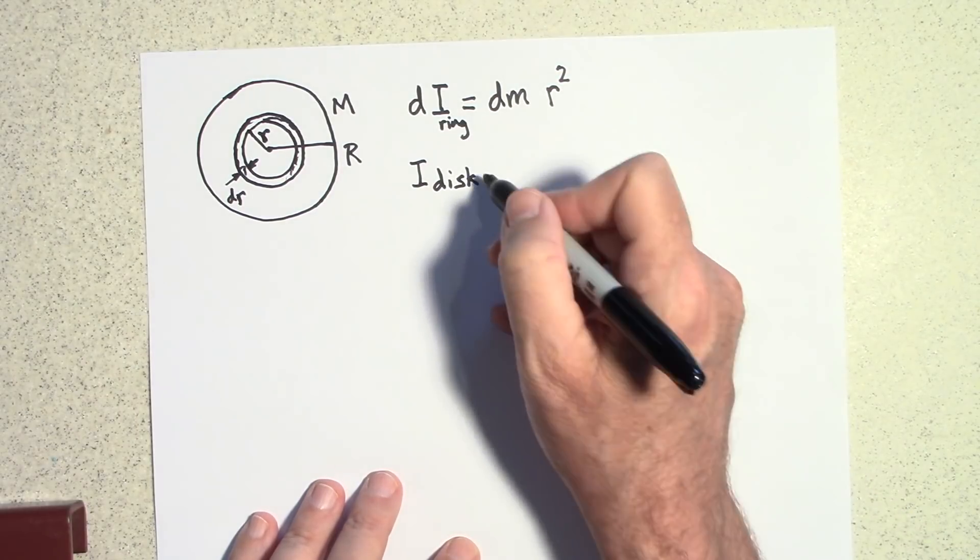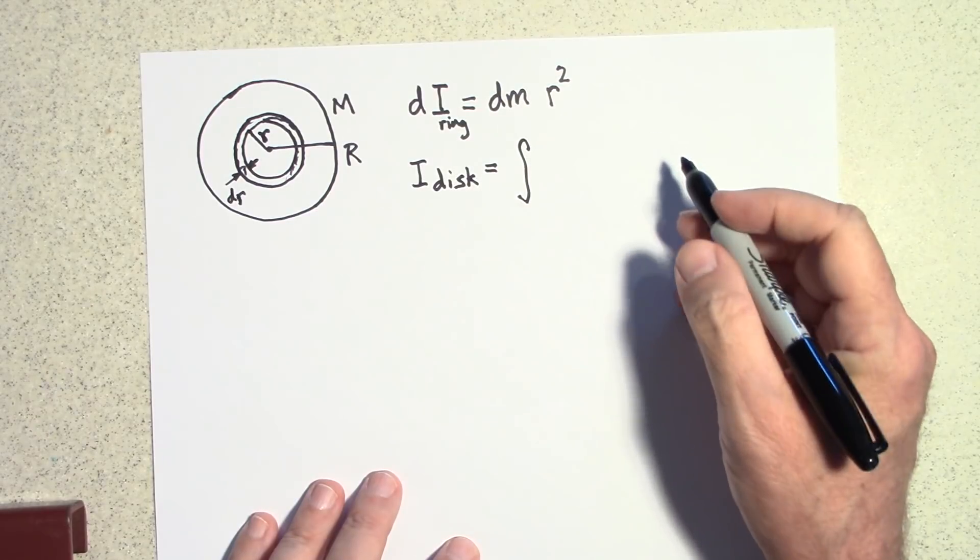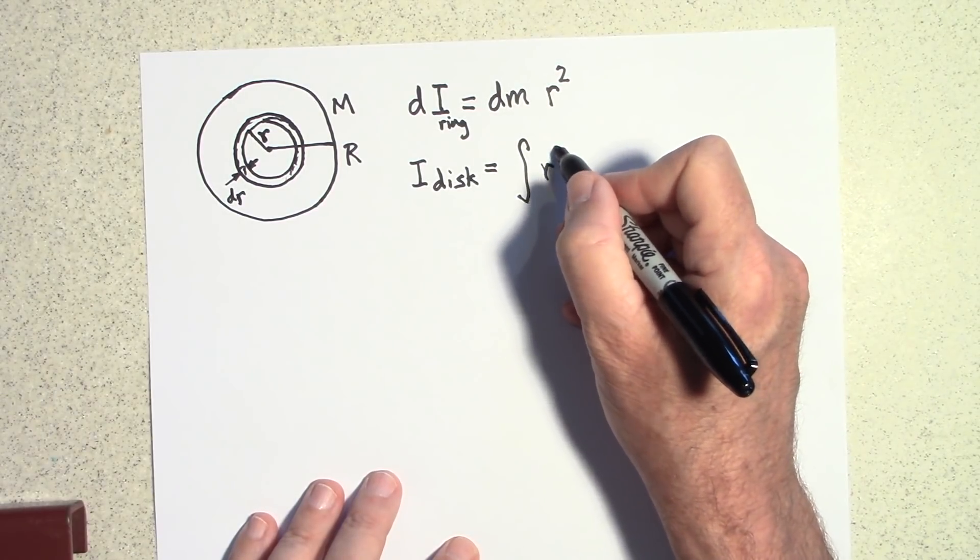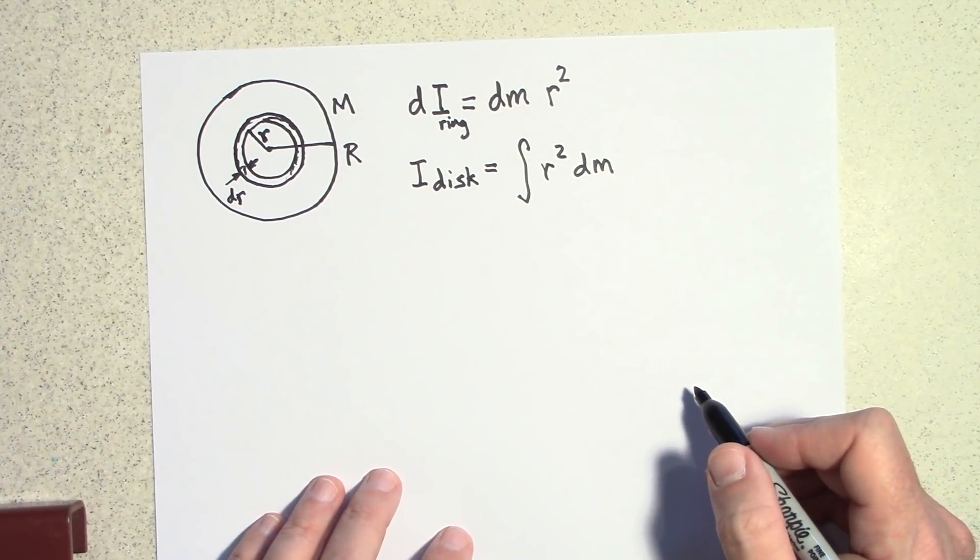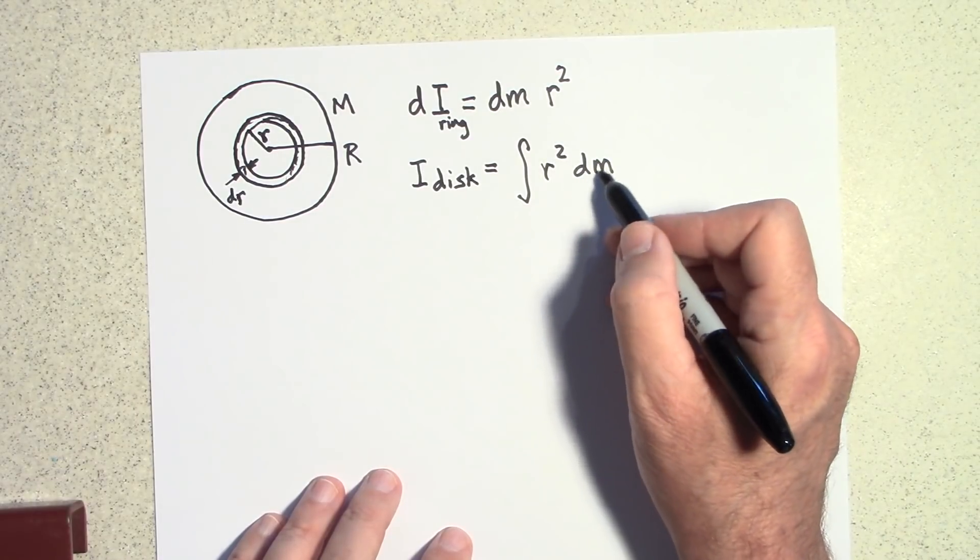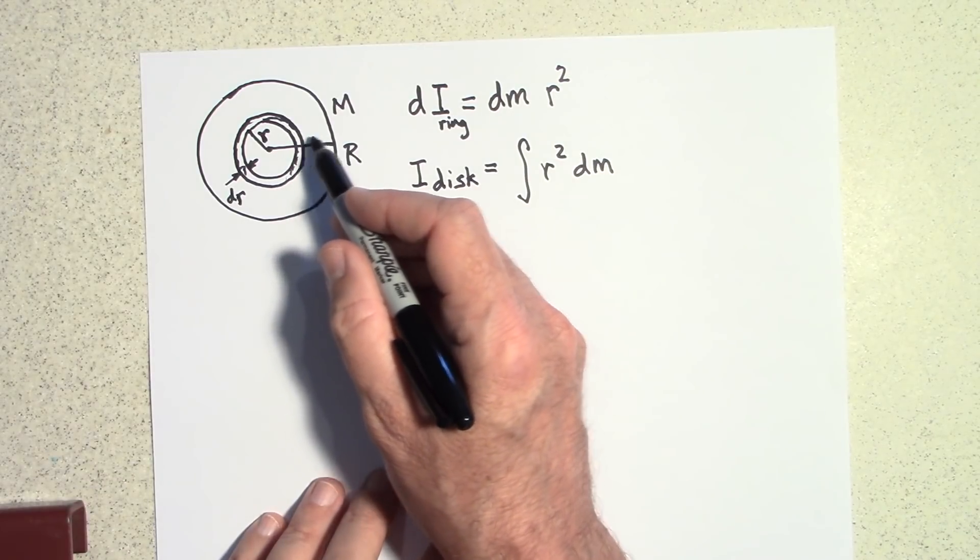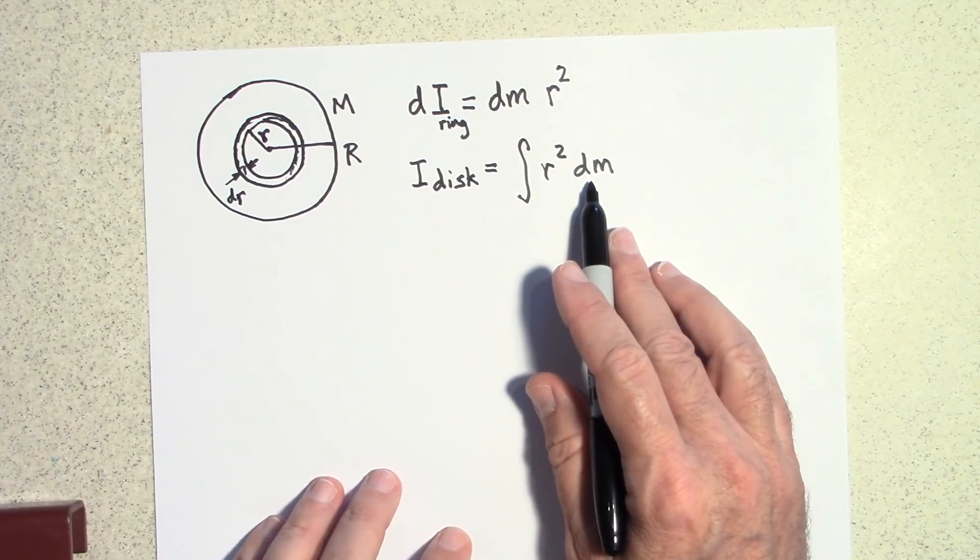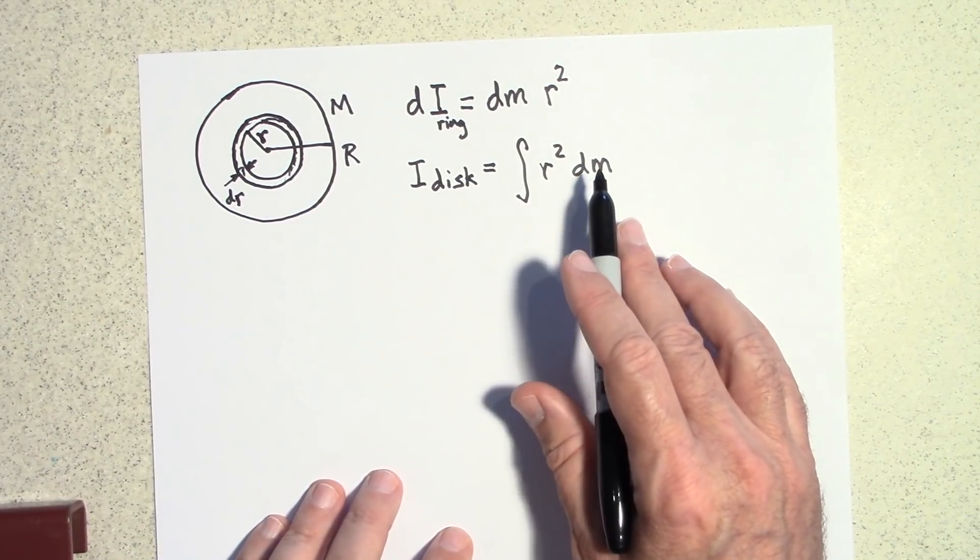So it's going to be the sum of all these. So I'll just switch these around, r squared dm. It's the sum of all those. Now but we have a problem here because my differential is dm but my variable is r. See, as if I go out to different rings I have a different r. So my variable is r but my dm is my differential. So I have to change my differential to a dr.